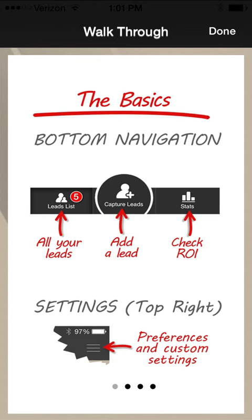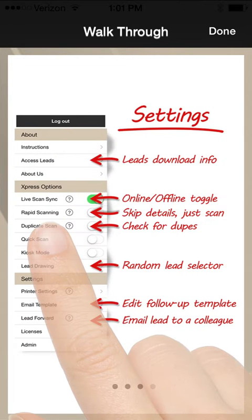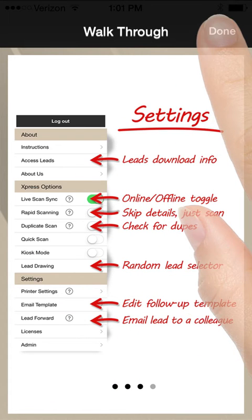Once you have entered the license key, you will be brought to the walkthrough instructions. There are brief visual instructions that show you the primary functions of the app. After you have viewed the instructions, click the Done button in the top right corner of the screen to start collecting leads.